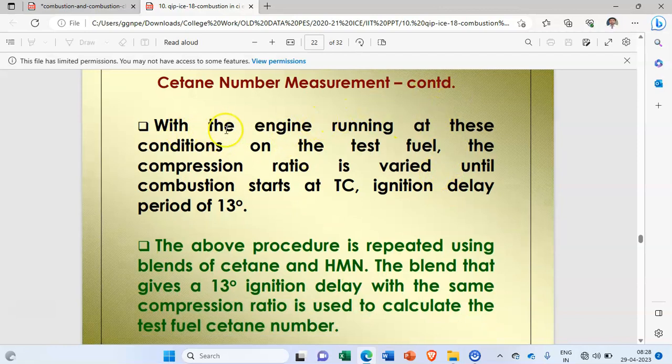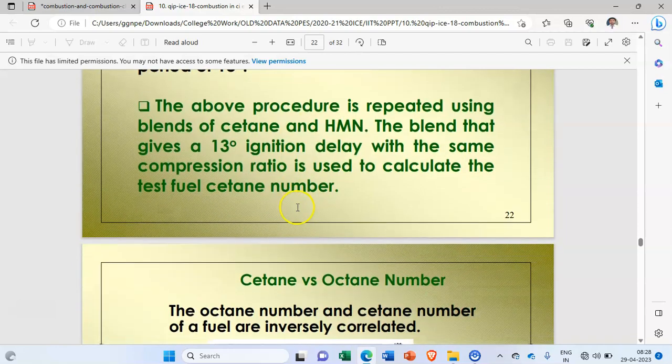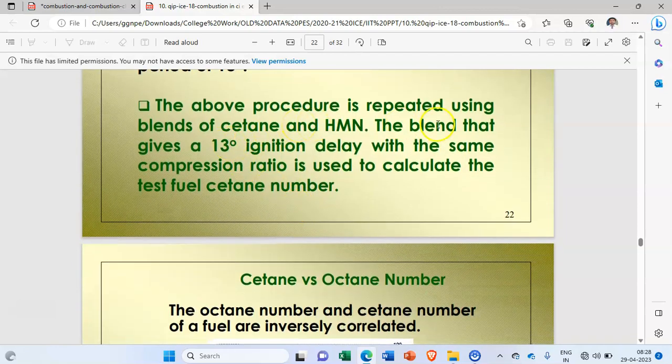Cetane number measurement: with the engine running at these conditions on the test fuel, the compression ratio is varied until compression starts at top dead center with ignition delay period of 13°. The procedure is repeated using blends of cetane and HMN. The blend that gives 13° ignition delay with the same compression ratio is used to calculate the test fuel cetane number.